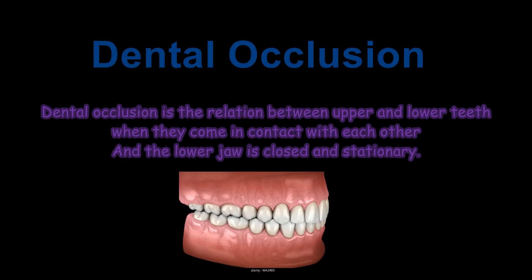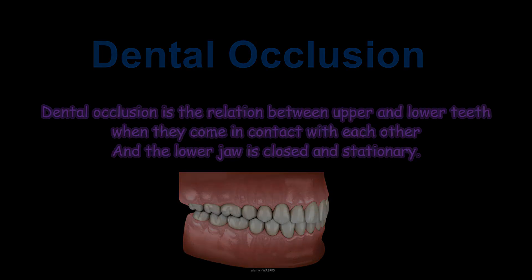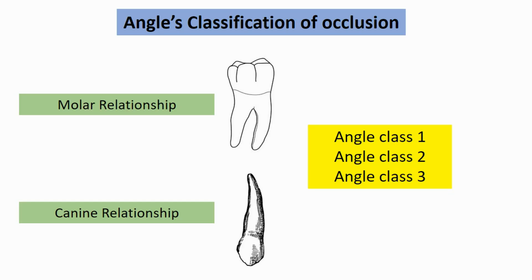Dental occlusion is the relation between upper and lower teeth when they come in contact with each other and the lower jaw is closed. Stationary occlusion types according to Angle classification depends on two factors: the molar relationship and the canine relationship. Angle classified occlusion into three classes: Class 1, Class 2, and Class 3.